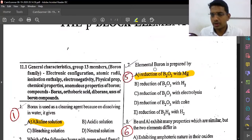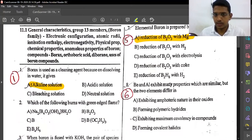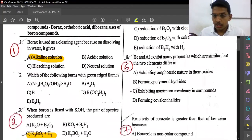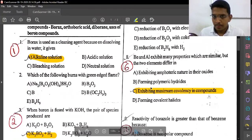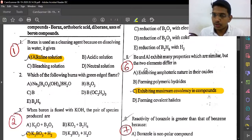Elemental boron is prepared by reduction of B₂O₃ with magnesium. The chemical reaction for preparation: elemental boron is prepared by reduction of B₂O₃ with magnesium. Beryllium and aluminum exhibit many properties which are similar, but the two elements differ in exhibiting maximum covalency. Beryllium and aluminum have different covalency - aluminum is plus three.